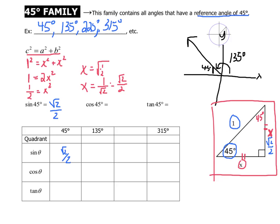What about the cosine of 45 degrees? The cosine considers the adjacent, which is also root 2 over 2, divided by the hypotenuse 1. So the cosine of 45 degrees is root 2 over 2. Finally, the tangent is the opposite divided by the adjacent. If you take root 2 over 2 and divide it by itself, any number divided by itself is exactly equal to 1. So the tangent of 45 degrees is 1.